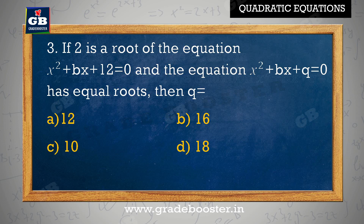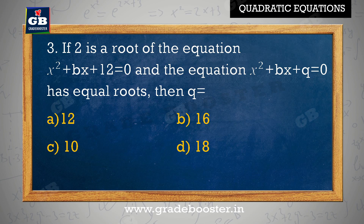If 2 is the root of the equation x square plus Bx plus 12 equal to 0, and the equation x square plus Bx plus C equal to 0 has equal roots, then C is equal to: A. 12, B. 16, C. 10, D. 18.